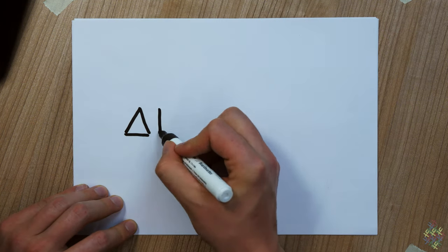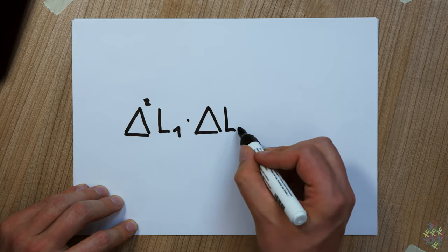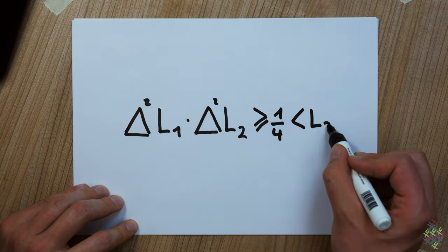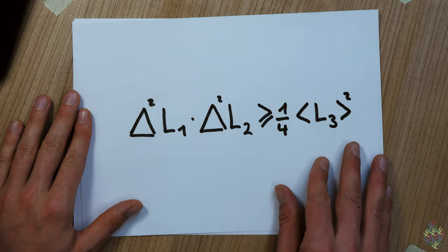When you look up our title in the index of a quantum mechanics textbook, what you will most likely find is this relation for the variances of two angular momentum components due to Robertson. So why are we not happy with this textbook material?